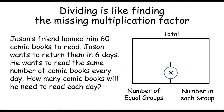Well, let's see what we know and what we're trying to find out. We know that altogether he has 60 comic books — that's the total number of books. We also know that he only has 6 days to read them all, and he wants to read the same number of comic books every day. So that means this is an equal groups problem.